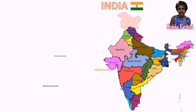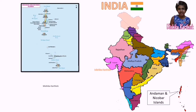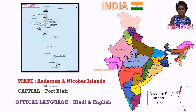Now let's see the nine Union Territories, capitals and their official languages. Andaman and Nicobar Islands, capital Port Blair, language Hindi and English.